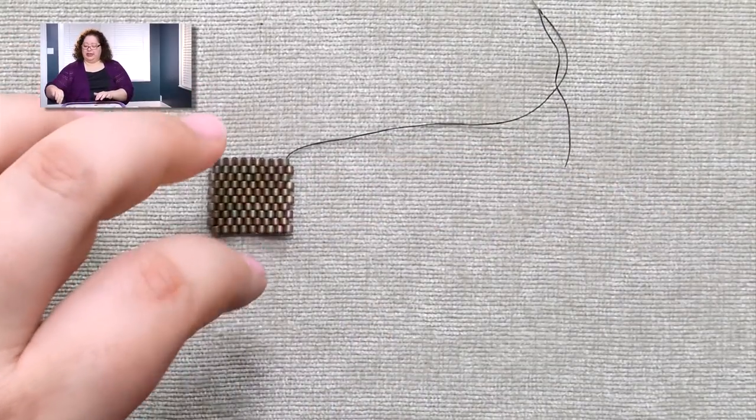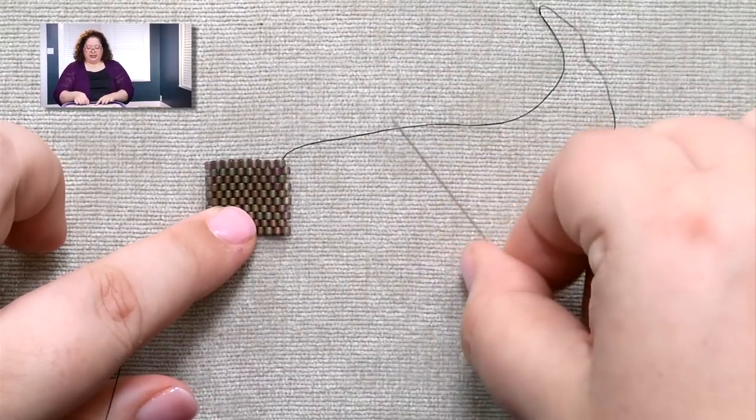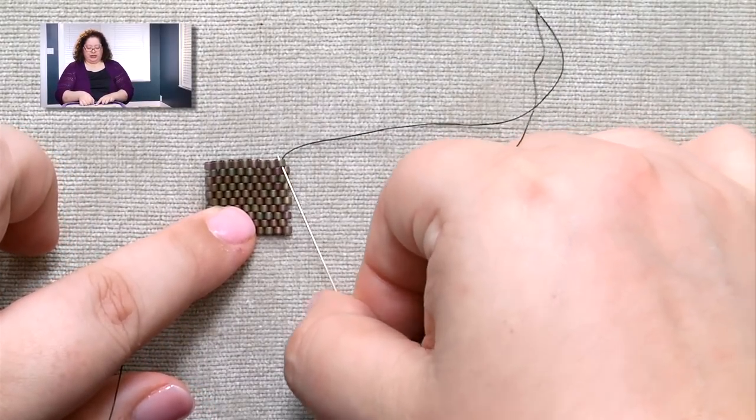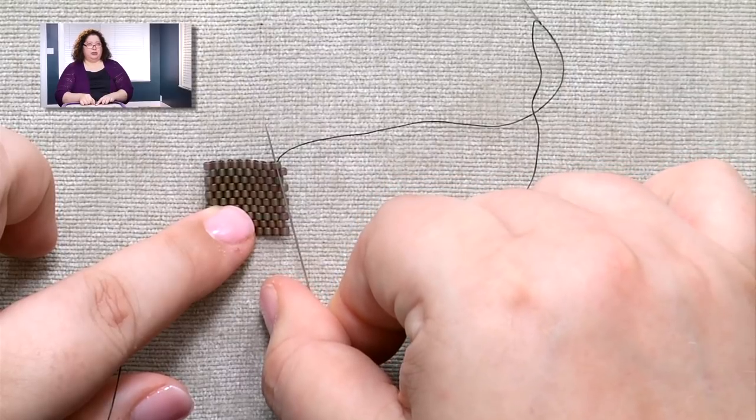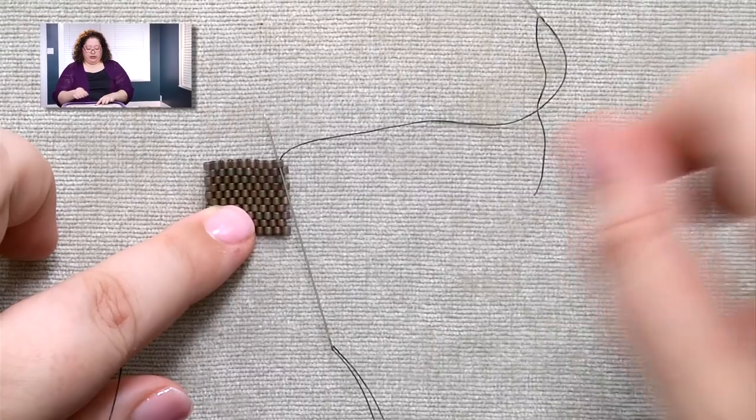So now what I do instead is I add my new thread first. And that way, once that is finished and put in coming out that same bead that your current thread is coming out of, then you can go ahead and end the old one off and not have to worry about it anymore.